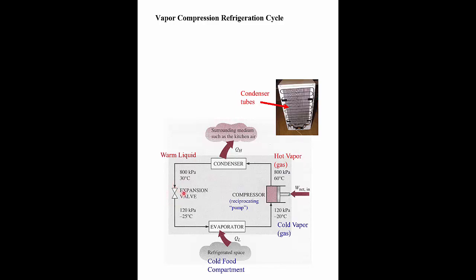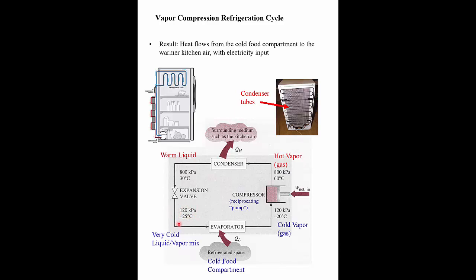This warm liquid then passes through an expansion valve, which drops the pressure and creates an expansion. When you release the pressure and let it expand, it gets cold again. So the hot gas has been cooled down, and now you let it expand through the expansion valve — it gets to minus 25 degrees C. That's cold enough to cool your food. This cold mixture of gas and liquid goes through the tubes inside your insulated refrigerator. It's much colder than your food, so it picks up the heat from the food — that's Q low — which causes the refrigerant to evaporate. Eventually it converts all to gas and goes back to the compressor.